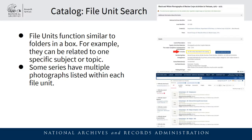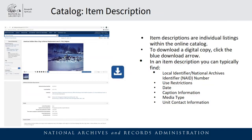Similar to a series search, some of our records are organized into file units. File units function similar to physical folders in a box and are usually grouped by a specific subject or topic. Once you view a list of file units after hitting 'Search within this series,' you can click into the file unit description, which will have a similar button labeled 'Search within this file unit' showing all photographs listed under that specific file unit or subject.